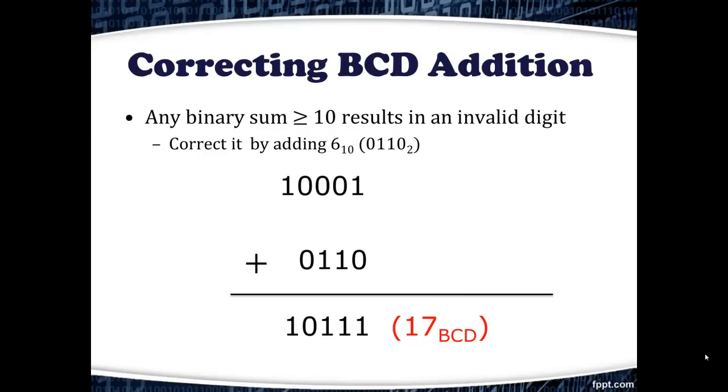Any binary sum greater than or equal to 10 results in an invalid digit. We correct that by adding 6.